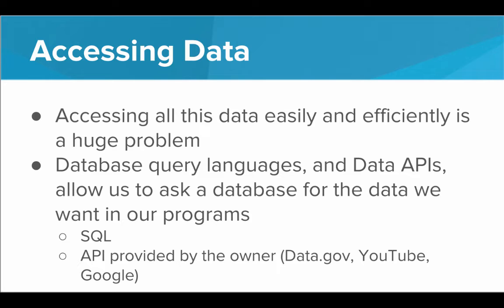Oftentimes a programmer might want to access another company's data. Say you're making a video streaming app and want to access YouTube videos — YouTube will provide what's called a data API so that you don't have to connect directly to YouTube's database. You can say, 'Give me all videos with the tag cat or all videos made after 2009,' and YouTube will provide a function you can call — like dot get videos or videos dot filter where year equals 2009. These are ways we can access data from large databases.